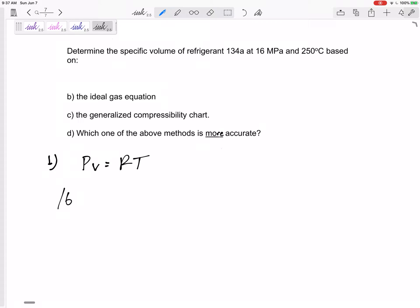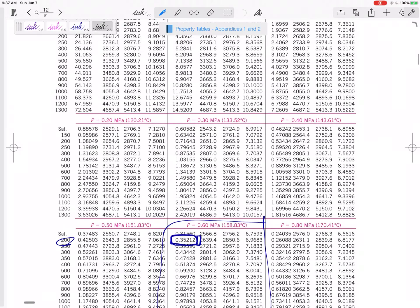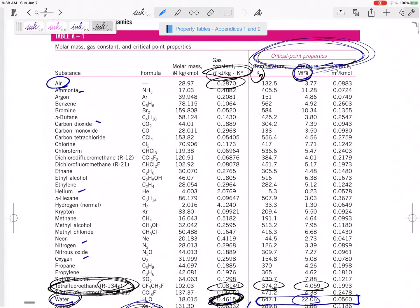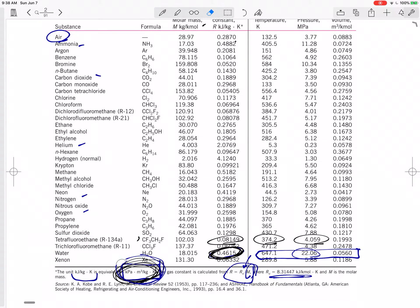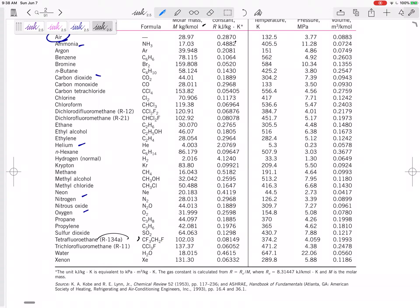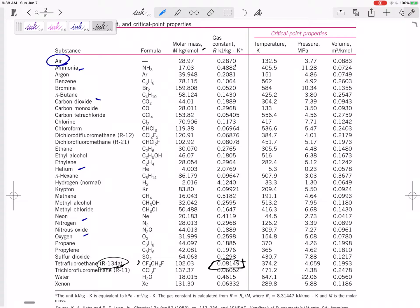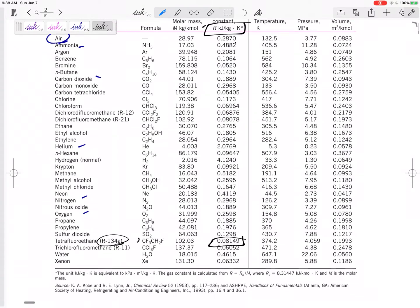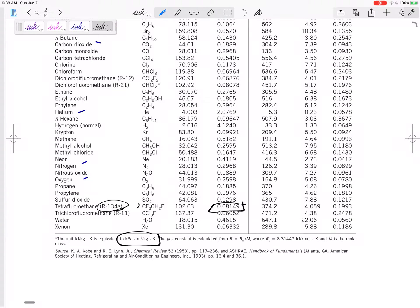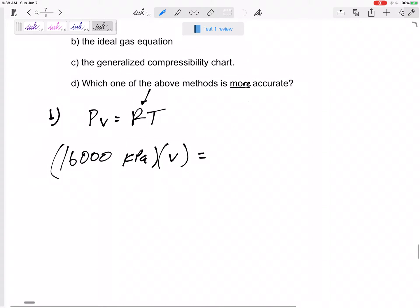Part B, ideal gas equation: PV equals RT. The pressure, 16 MPa, you can look at our units here. For the units to work out, I'm going to use kPa, so 16,000 kPa times the specific volume, which is what I'm looking for, times R. What is the R for the refrigerant? That would be right here at the very front, table A-1 for refrigerant 134a. The R value is 0.08149, which is kilojoules per kilogram K, but it is also equal to kPa meters cubed per kilogram K. That's what I'm going to use.